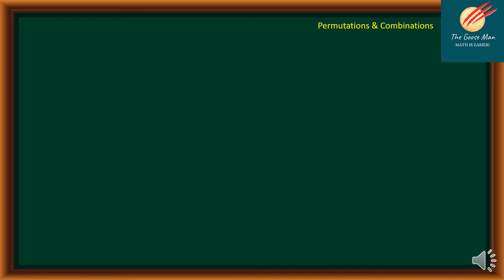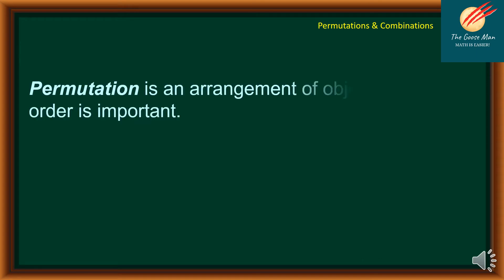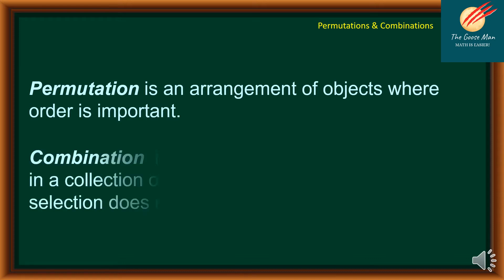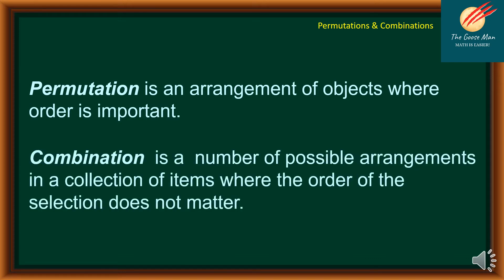Before we solve problems, let's recall first the definition of permutation. Permutation is an arrangement of objects where order is important. On the other hand, combination is a number of possible arrangements in a collection of items where the order of the selection does not matter.